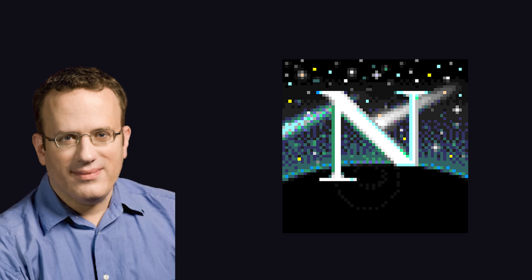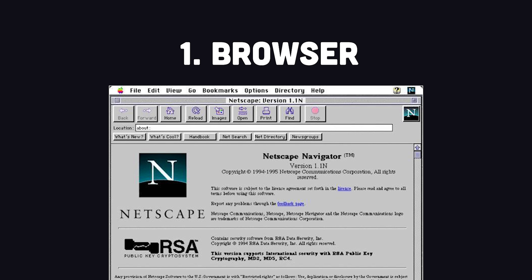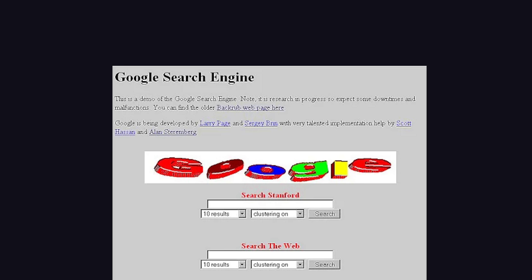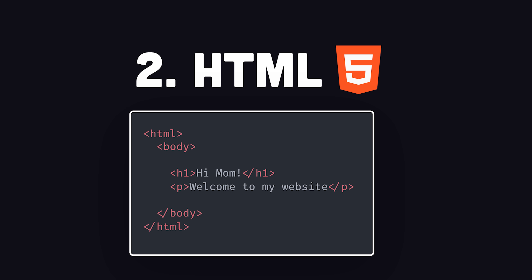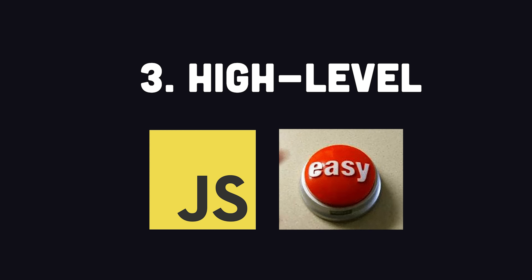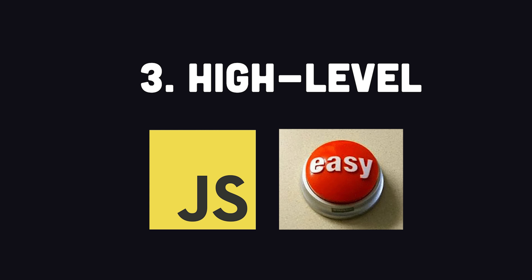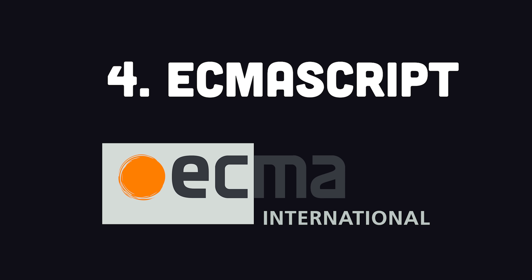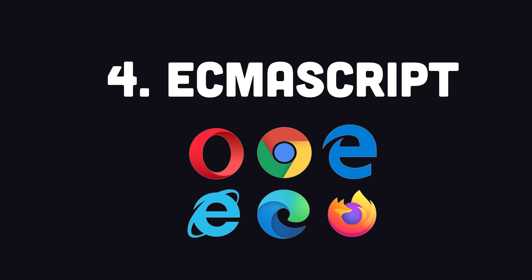It was created in 1993 by Brendan Eich at Netscape. At the time, the web browser was cutting-edge technology that connected everybody on the planet via the World Wide Web. Websites were completely static with pure HTML. JavaScript was designed as an easy-to-use, high-level language to help developers make these websites interactive. Today, it's arguably the most popular language in the world, and its standard implementation is called ECMAScript.